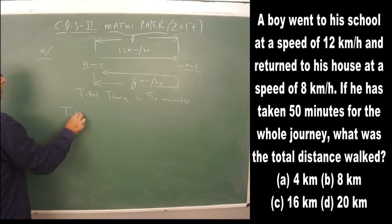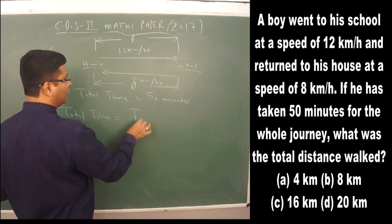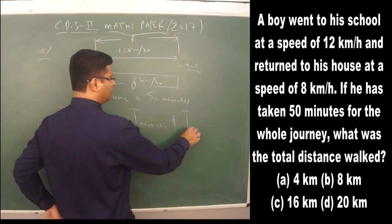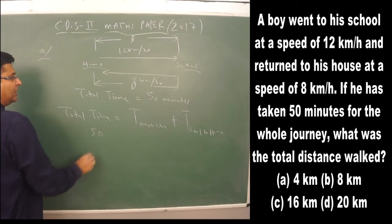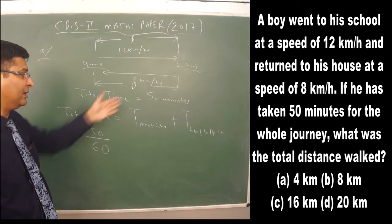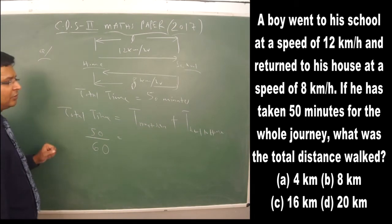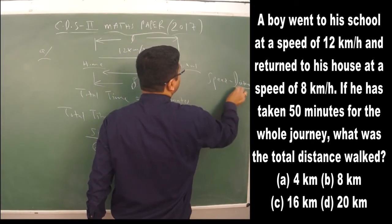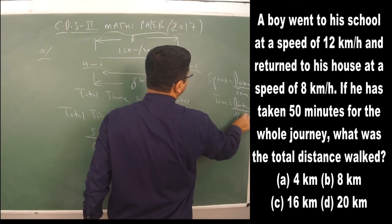The total time is the time taken from home to school plus the time from school to home, which equals 50 minutes. We need to convert minutes to hours by dividing by 60. The formula for time is distance divided by speed.